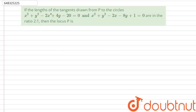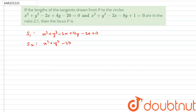It is given that the lengths of the tangents drawn from P to two circles are in the ratio 2:1. The two circles given to us are: S1 is x² + y² - 2x + 4y - 20 = 0, and S2 is x² + y² - 2x - 8y + 1 = 0.